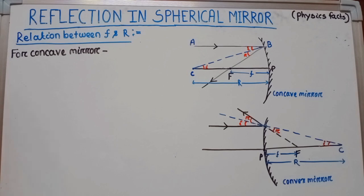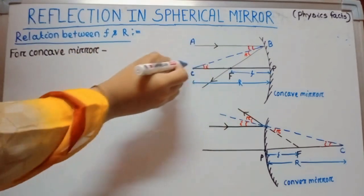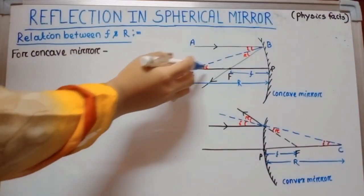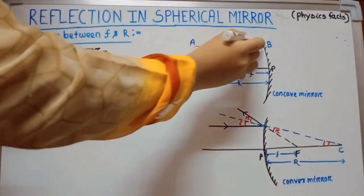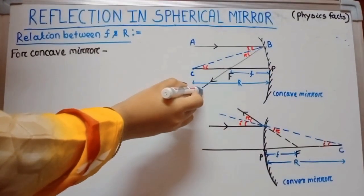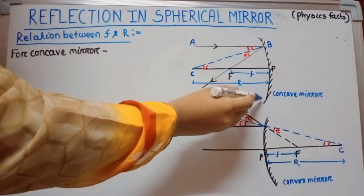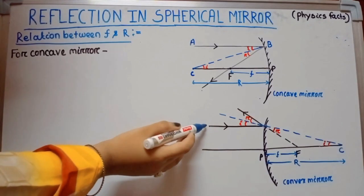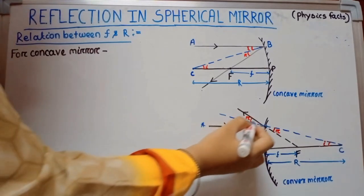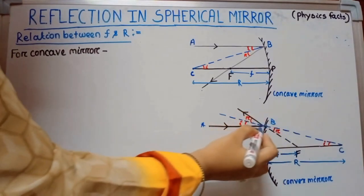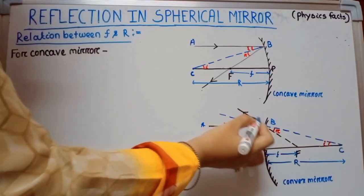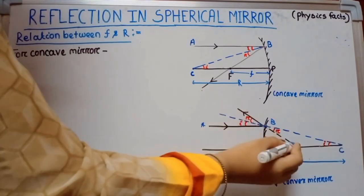We take a concave mirror and also a convex mirror. Take a ray AB parallel to the principal axis. After reflection, the reflected ray passes through the focus in case of a concave mirror, whereas in case of a convex mirror, ray AB is parallel to the principal axis but diverges and appears to come from the focus.